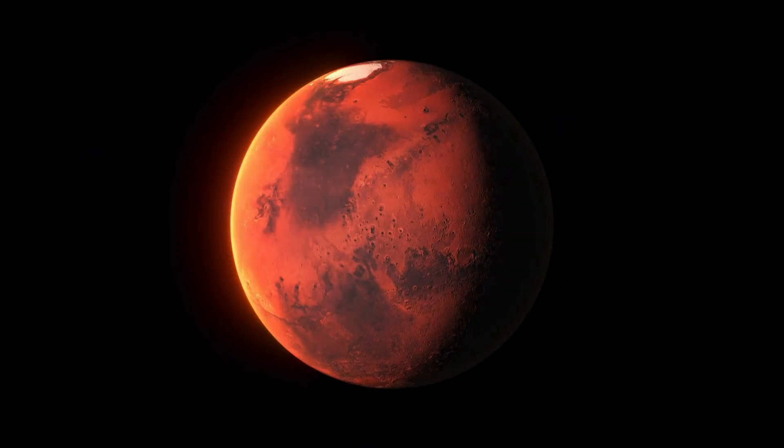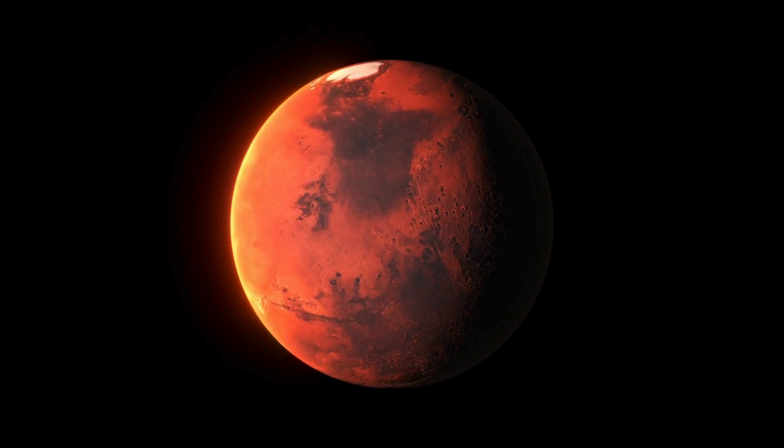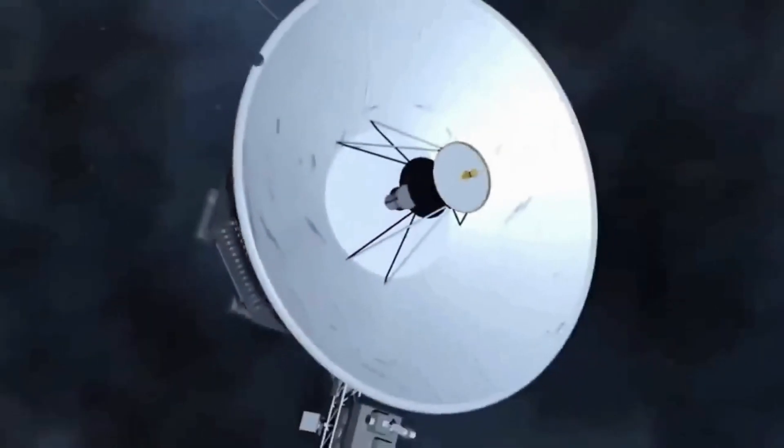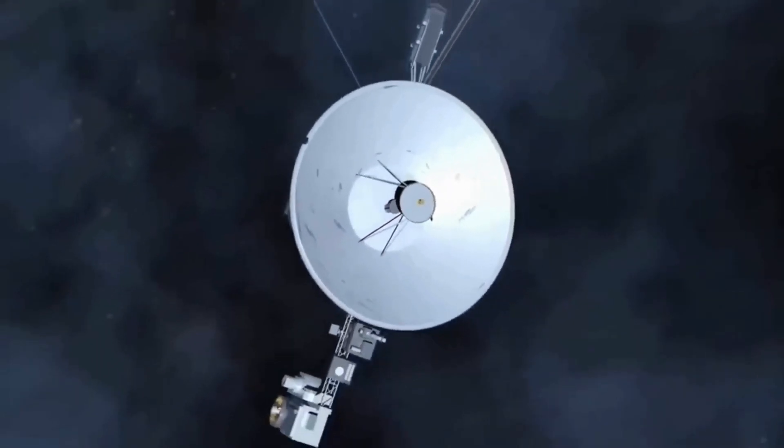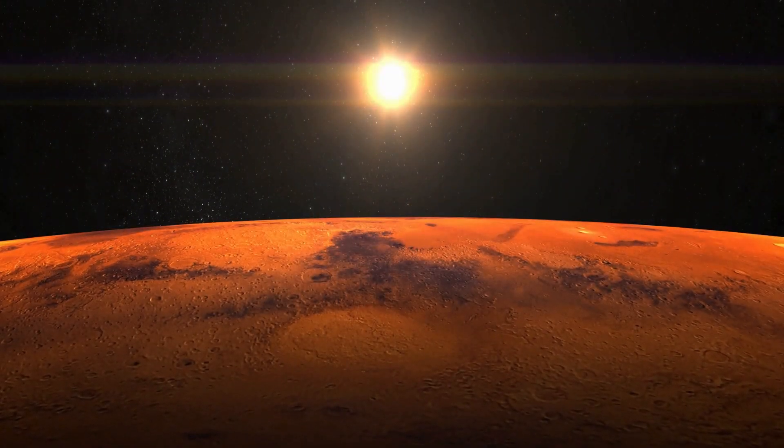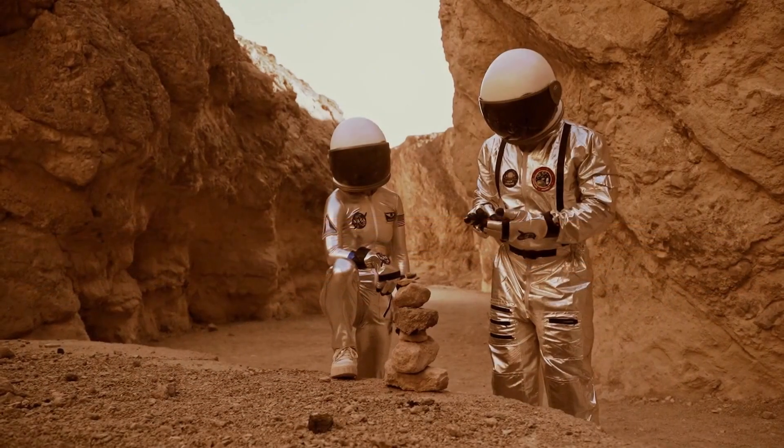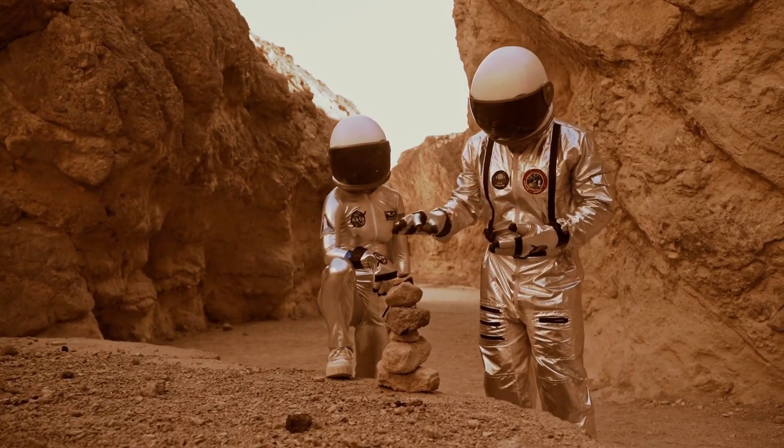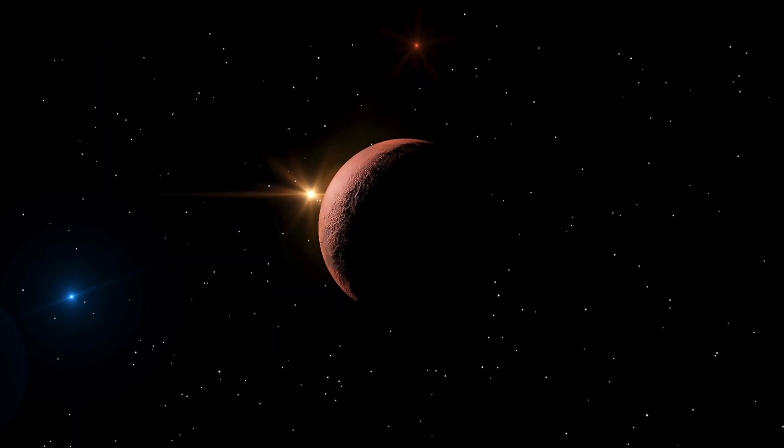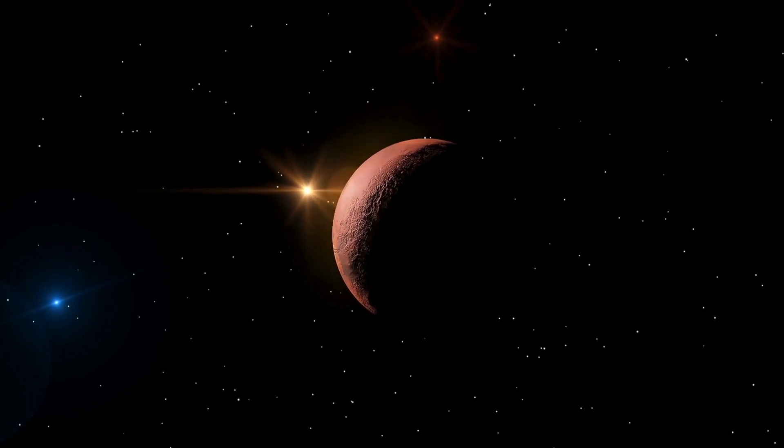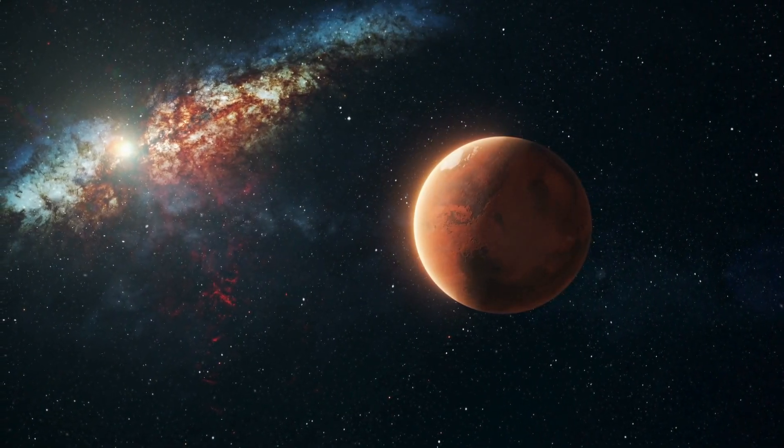In 2004, both Voyagers reached the termination shock, where solar winds slow dramatically. Voyager 1 eventually crossed into interstellar space, traveling an incredible 12 billion miles from Earth. It continues to send back data, despite operating on technology that predates modern microprocessors.